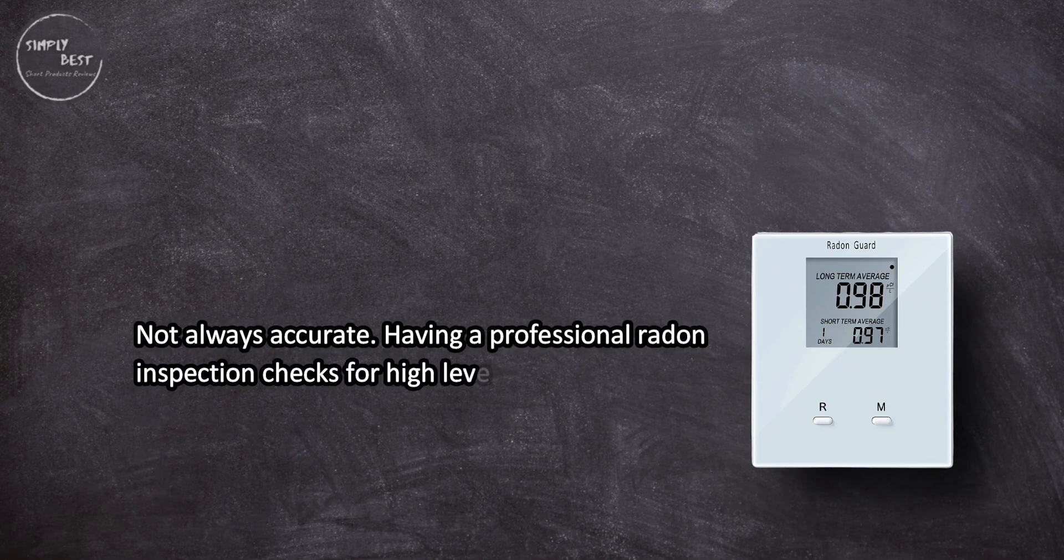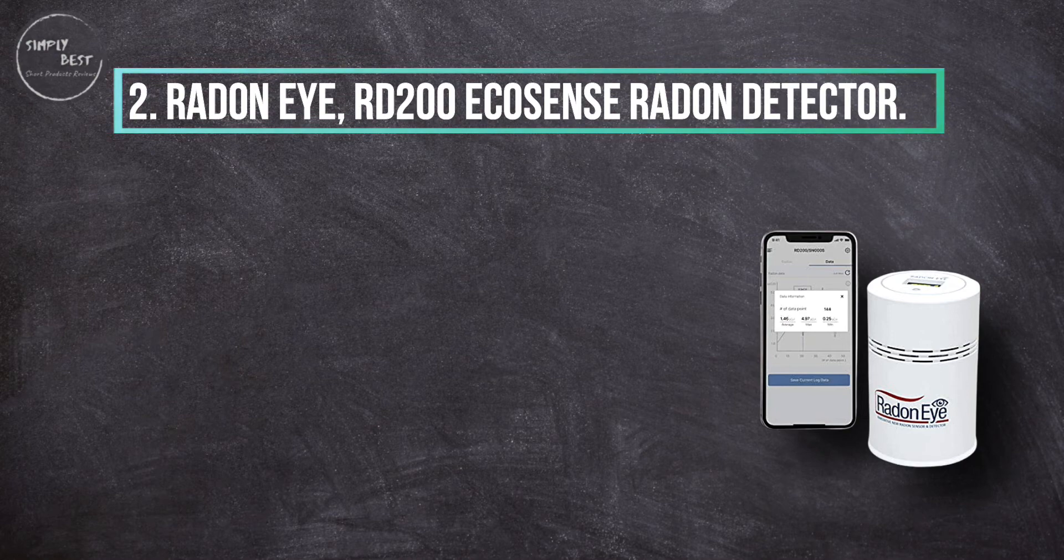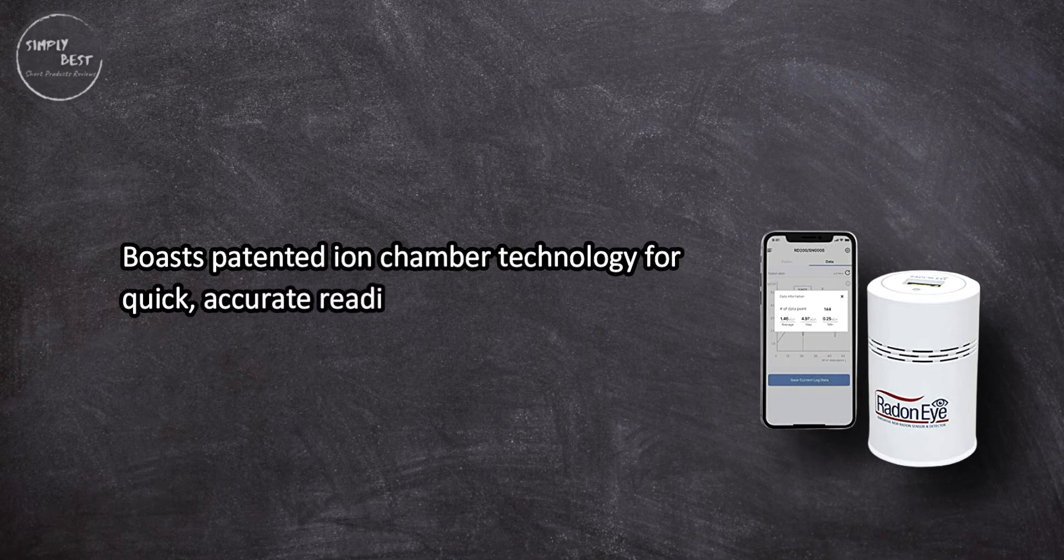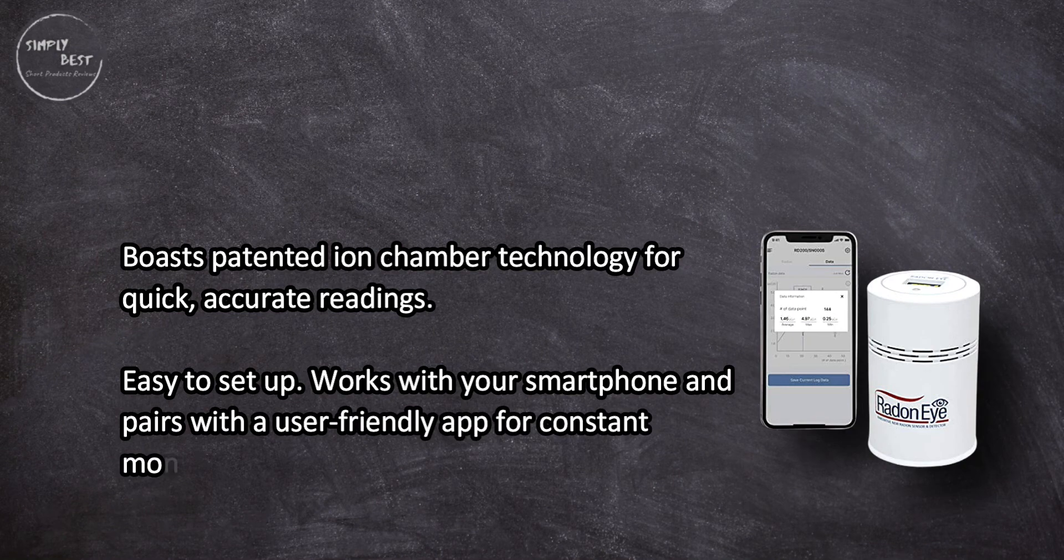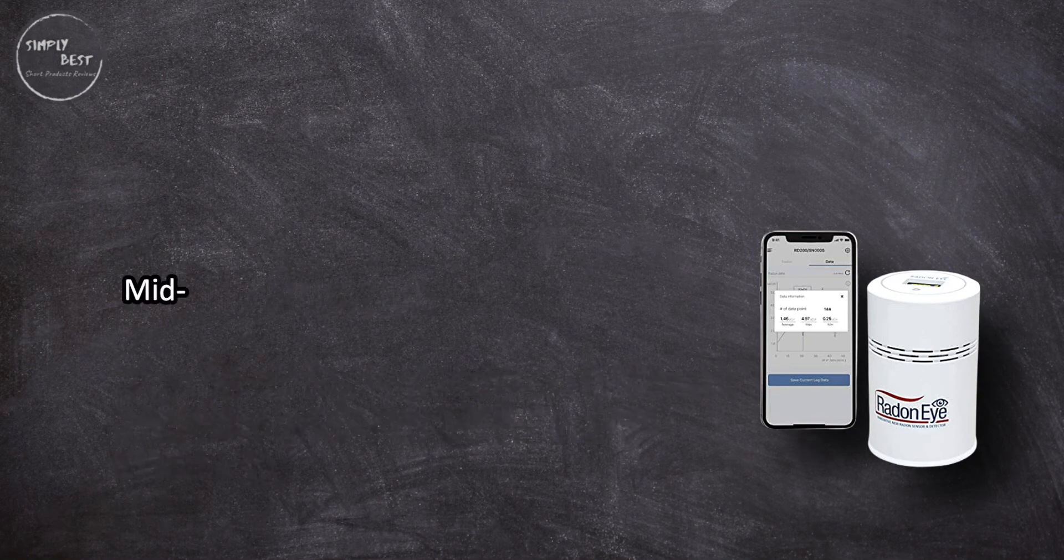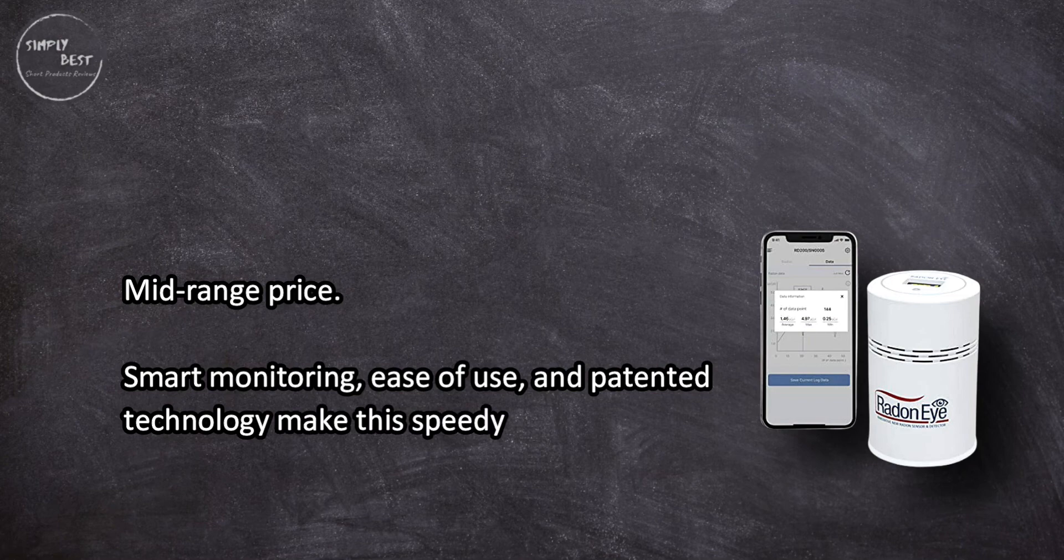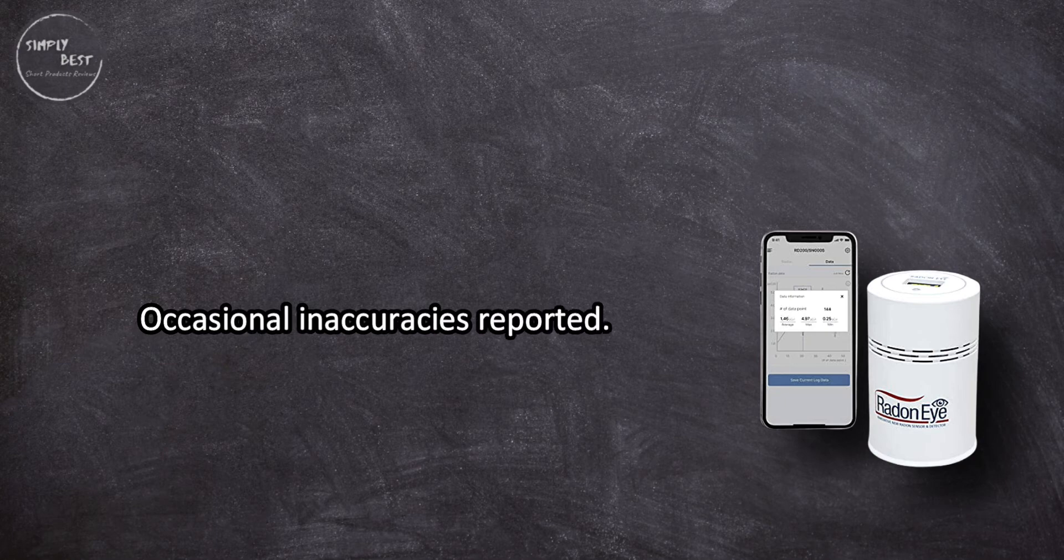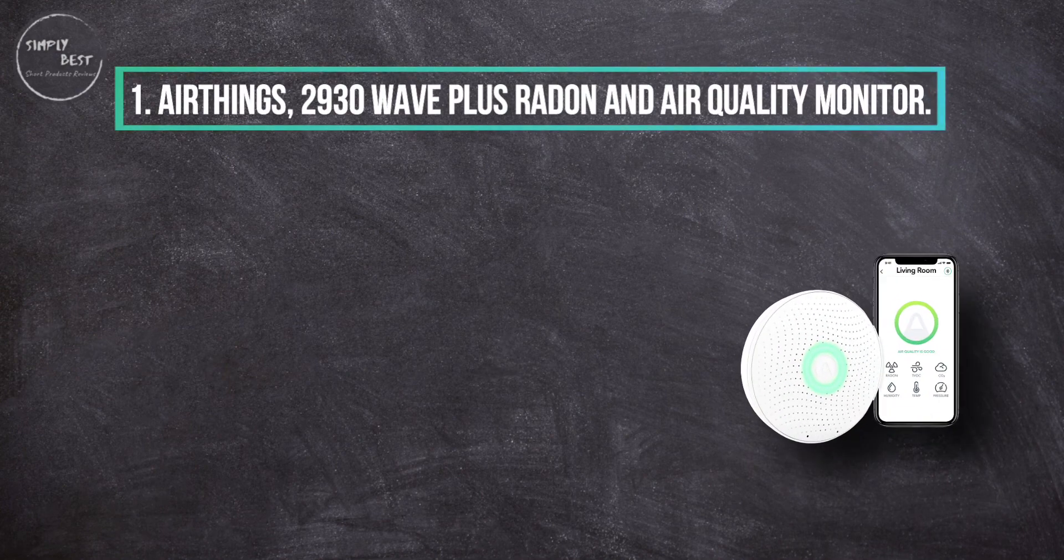At number two: Radon i RD200 Ecosense Radon Detector. Boasts patented ion chamber technology for quick, accurate readings. Easy to set up, works with your smartphone and pairs with a user-friendly app for constant monitoring. Mid-range price. Smart monitoring, ease of use, and patented technology make this speedy radon detector worth a look. Occasional inaccuracies reported, a few customers experienced quirks.